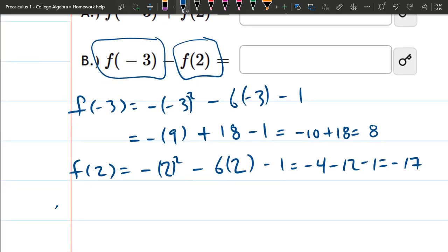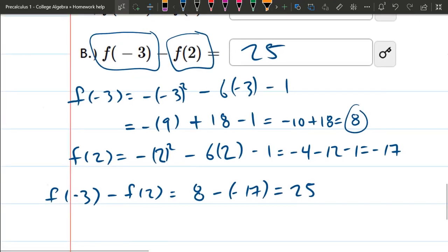All right, so last step, we're going to put them together. f of negative three minus f of two. And this is going to be f of negative three is eight minus negative 17. And we have eight minus negative 17. You're actually adding. And this should be 25, positive 25 here. And that will be this value right there. So that's the end of the problem.